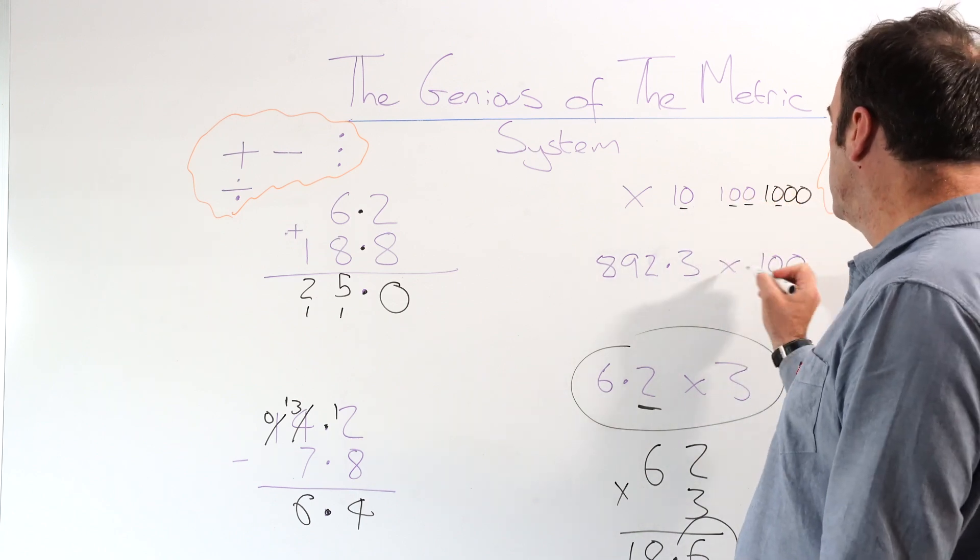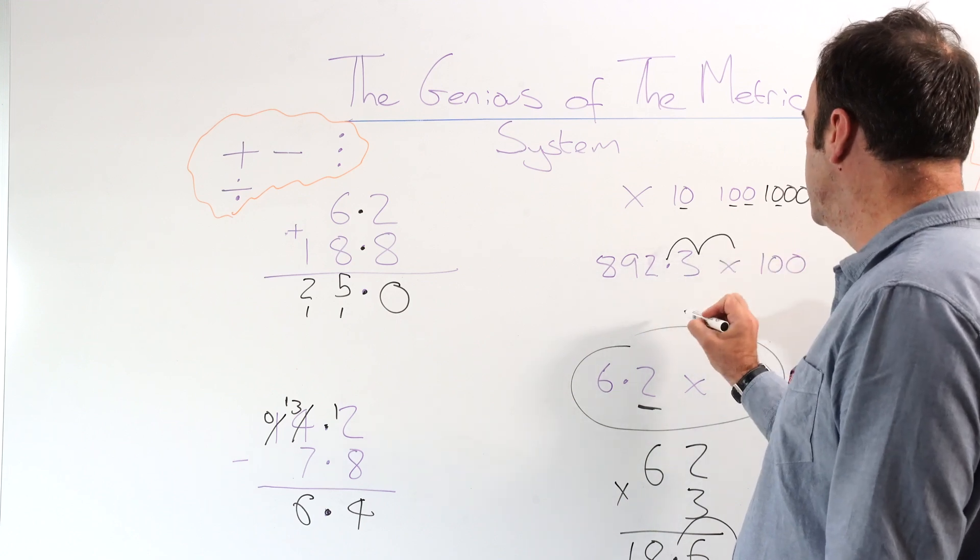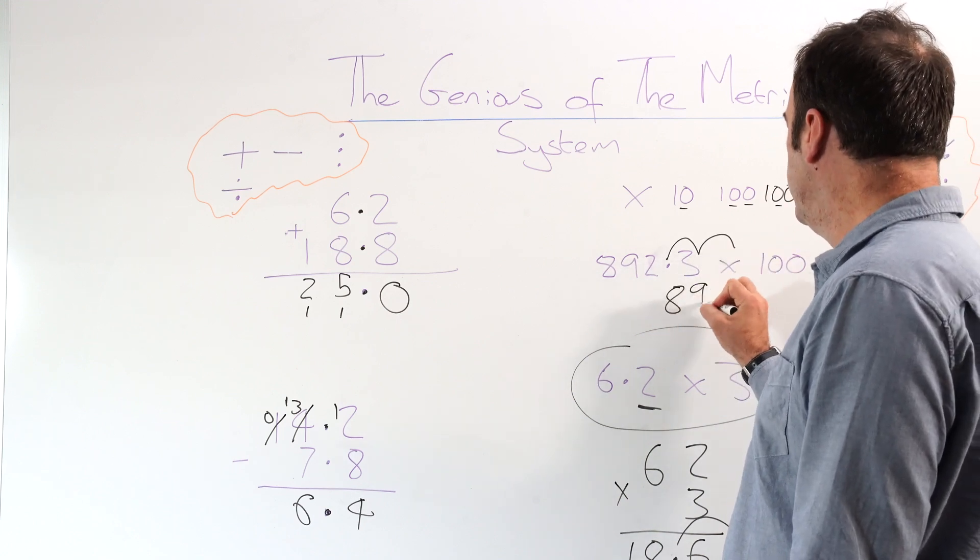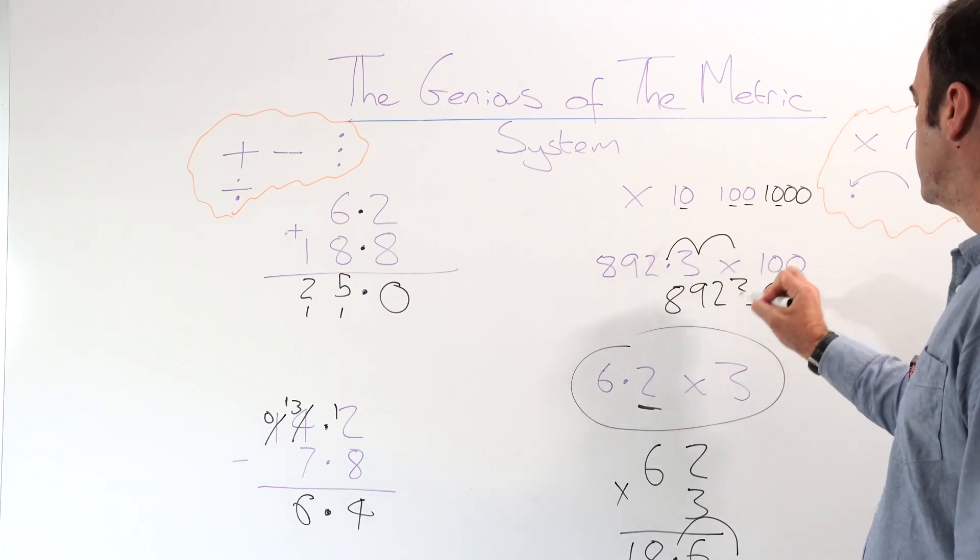So here we've got times 100. So we do one jump, two jumps. Then we've run out of numbers there. Not a problem. What we do is we've jumped and we add a zero. So that's the answer.